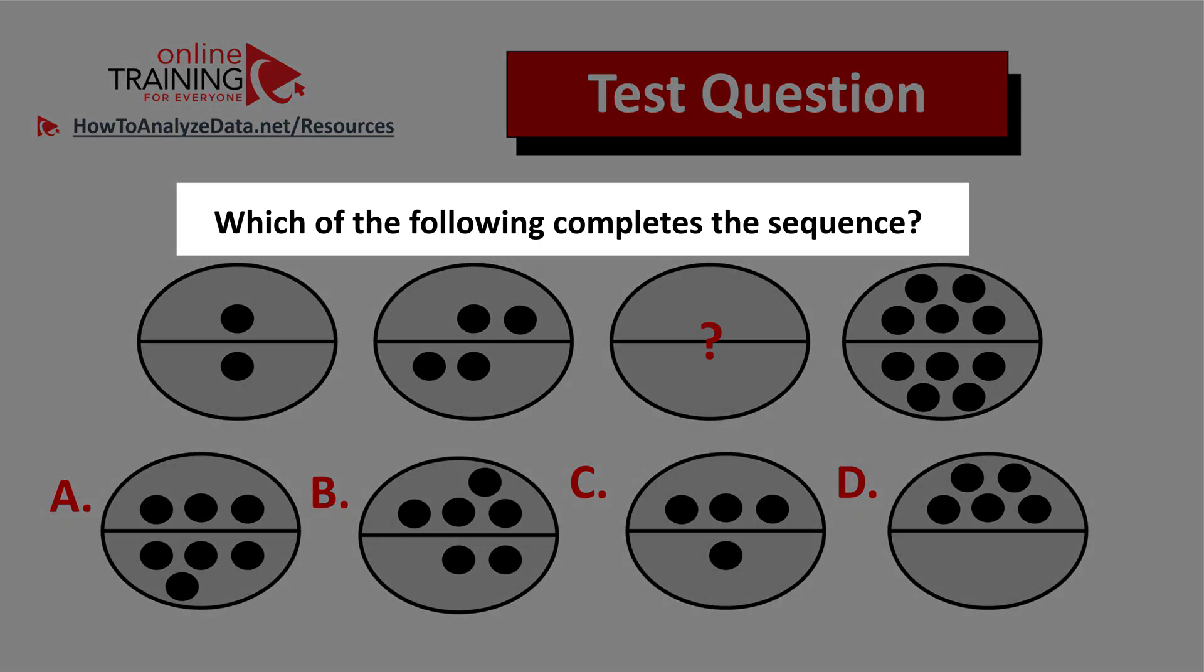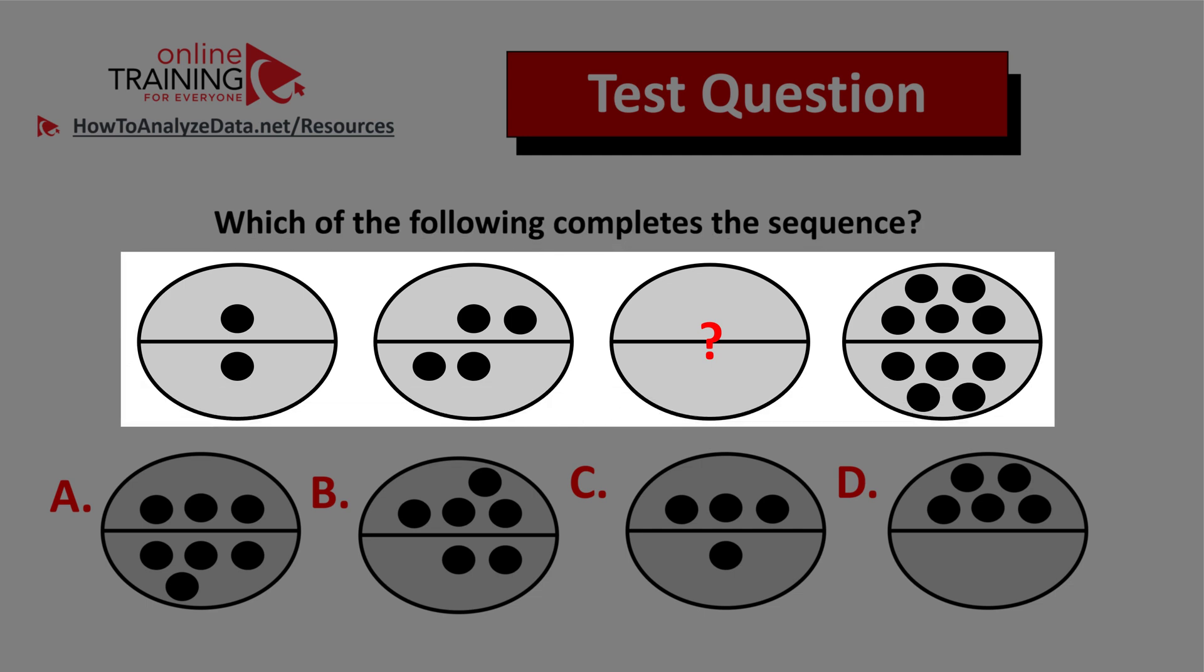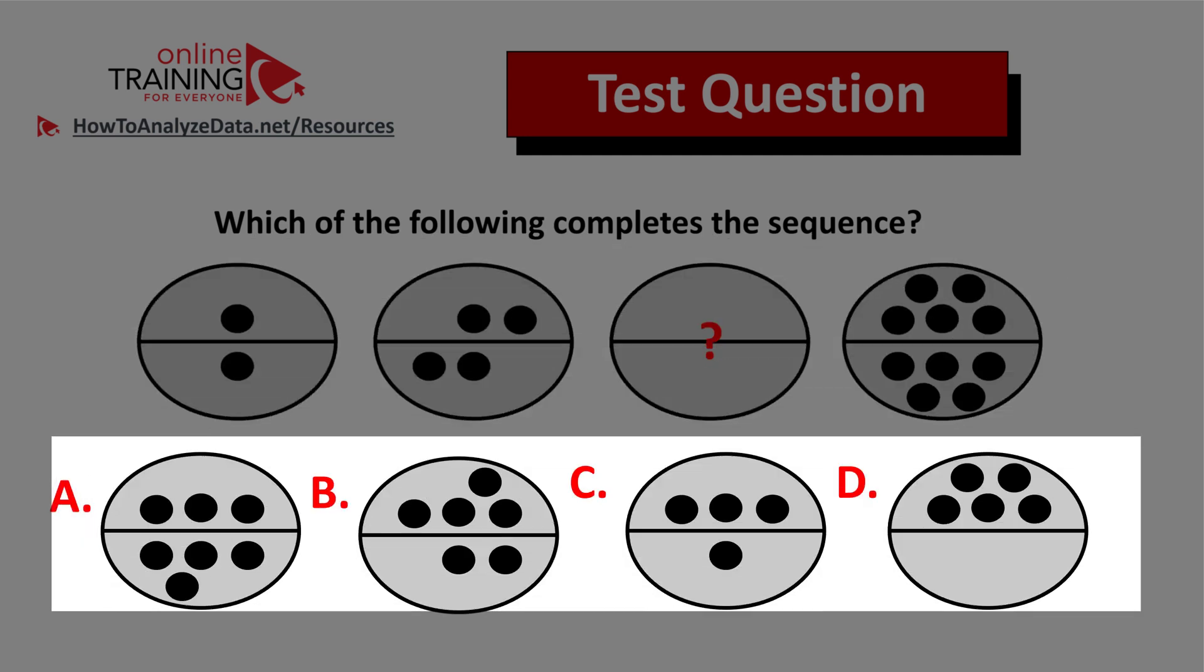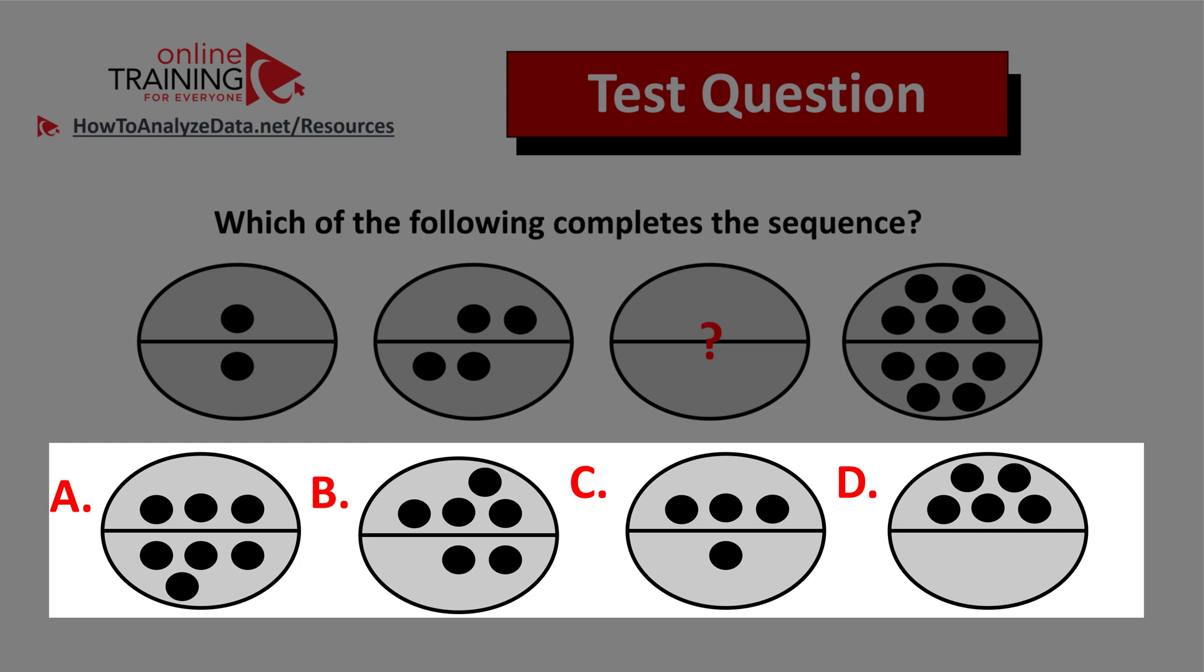You're presented with a sequence of four ovals and the third one is missing. And you have four different choices to choose from. Choice A, B, C, and D. All choices with similar ovals just with different dots located in different places of the oval.